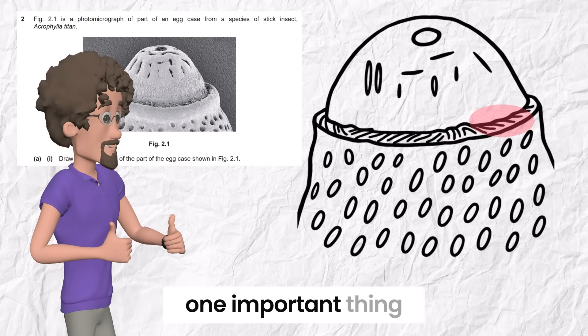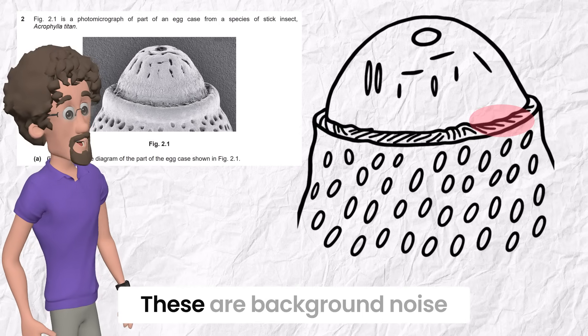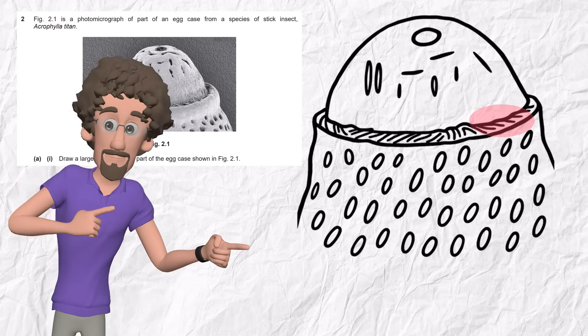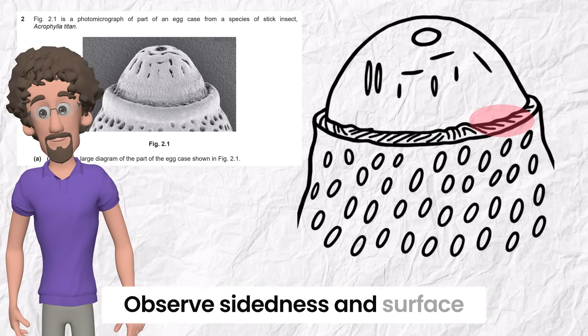This question teaches you one important thing. The details are not about random small features. These are background noise. Focus on landmarks. Show in your drawing that you are oriented by 3D. Observe sidedness and surface texture.